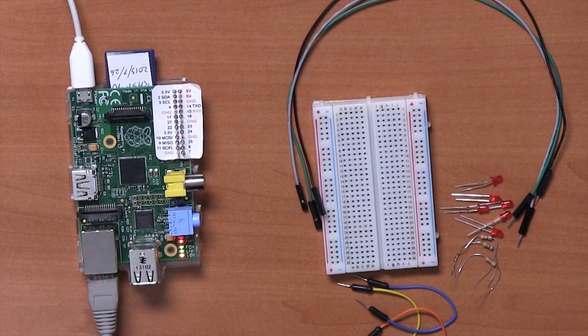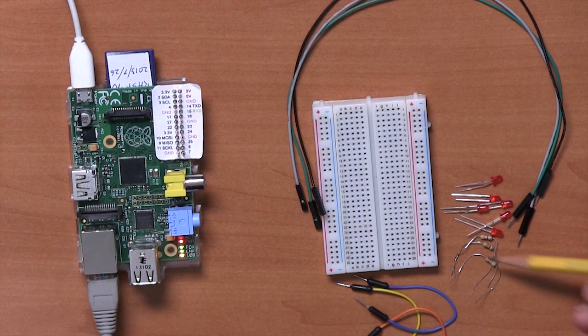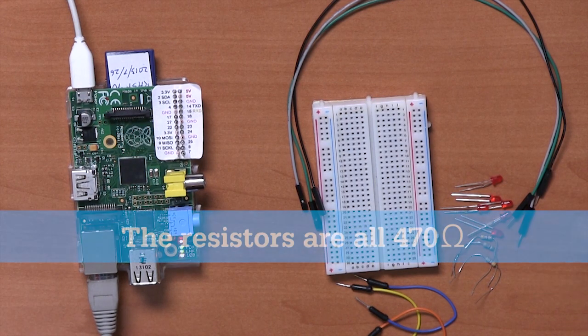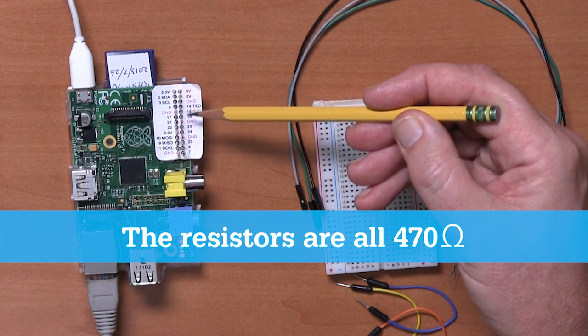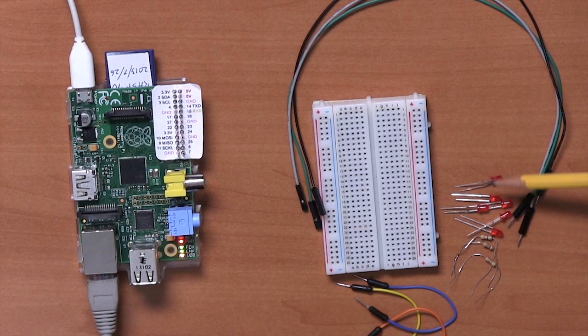What we're going to be doing here is we're going to be using six LEDs and three resistors, and we're going to be connecting to three of the GPIO pins of the Raspberry Pi. We're going to use that to turn any of these six LEDs on and off individually.